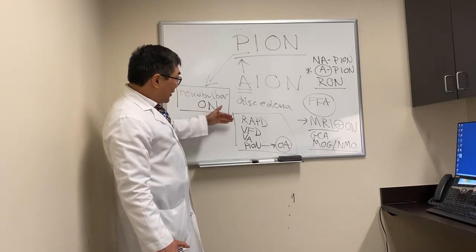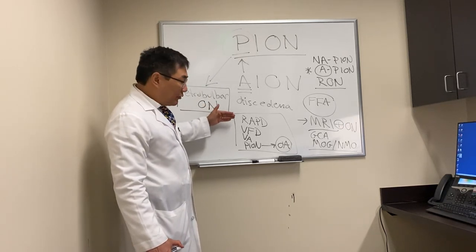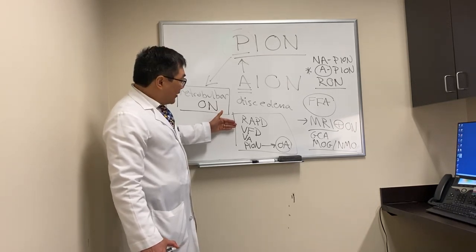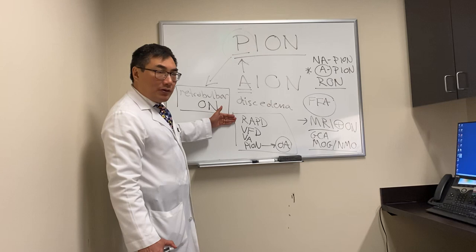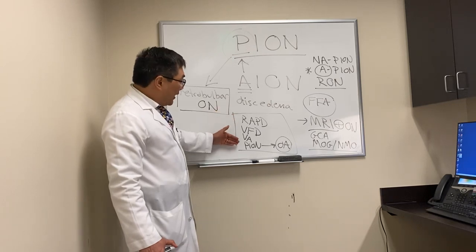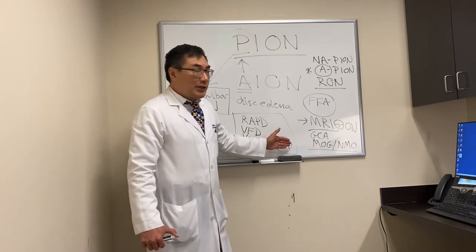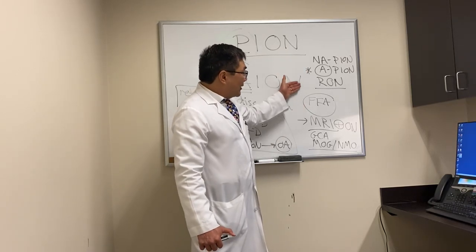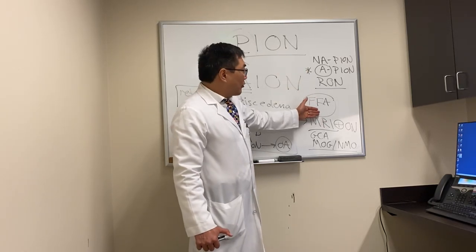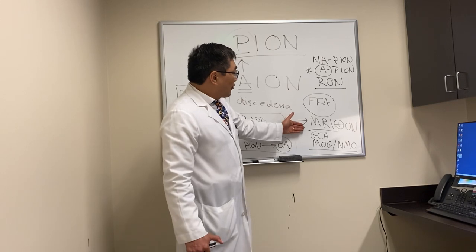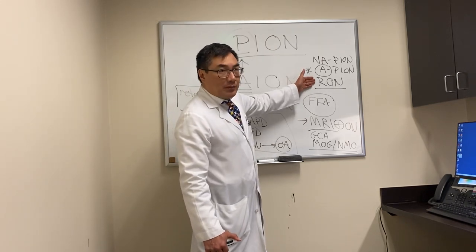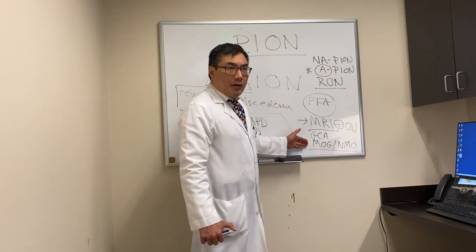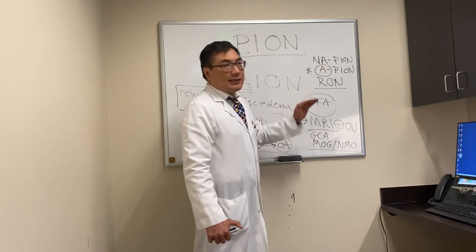In summary, posterior ischemic optic neuropathy is a retrobulbar optic neuropathy characterized clinically by acute unilateral or bilateral loss of vision, visual field and nerve fiber layer defect, and RAPD if bilateral or asymmetric, with a normal nerve that becomes pale over time. It can be arteritic or non-arteritic; if thinking about giant cell arteritis, do a fluorescein angiogram looking for choroidal perfusion deficit, and an MRI scan to rule out other retrobulbar optic neuropathies.